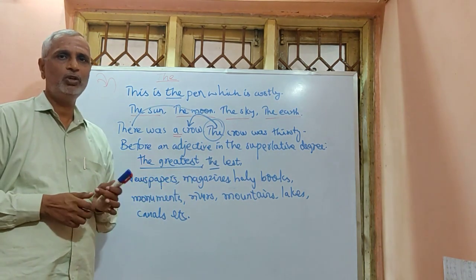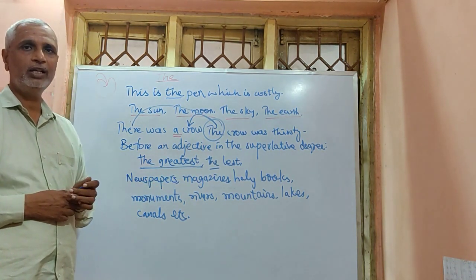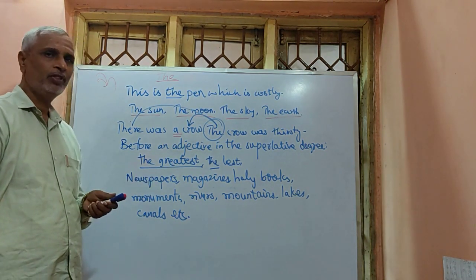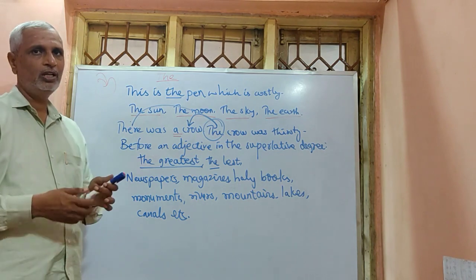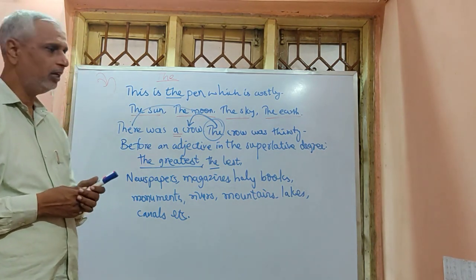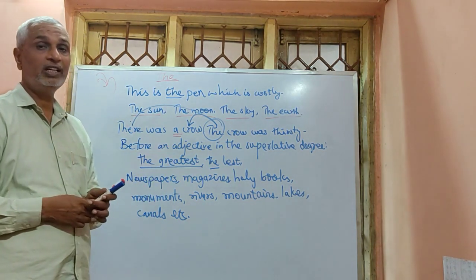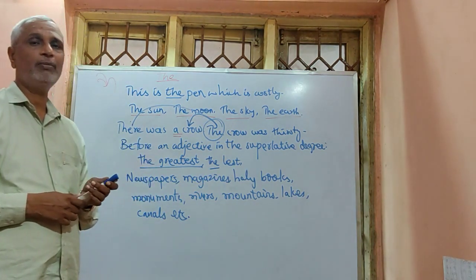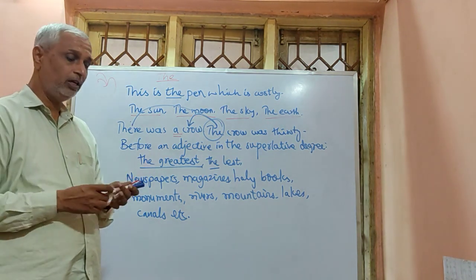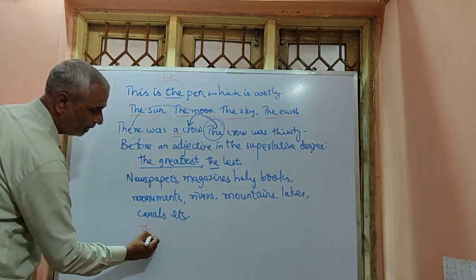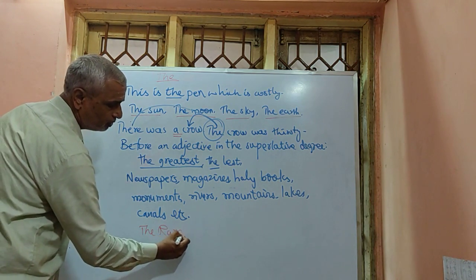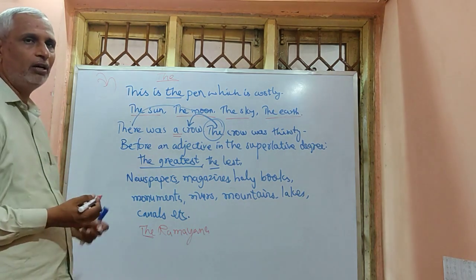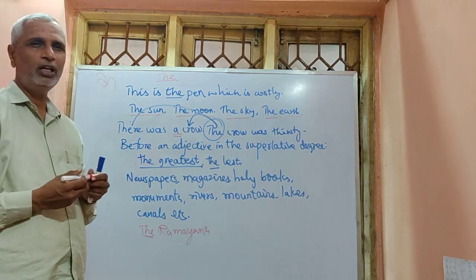Before the names of islands: the Andaman, the Nicobar. Before the names of newspapers: the Deccan Herald, the Indian Express, the Prajavani. Magazines: the Spardha Spurthi, the Reader's Digest. Holy books: the Ramayana, the Mahabharata, the Bible, the Quran.